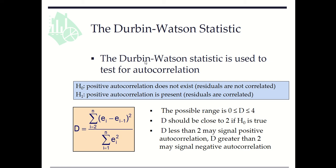We calculate the Durbin-Watson statistic as follows. The possible range is 0 ≤ D ≤ 4. D should be close to 2 if H₀ is true. D less than 2 may signal positive autocorrelation. D greater than 2 may signal negative autocorrelation, which we do not focus on in this problem.